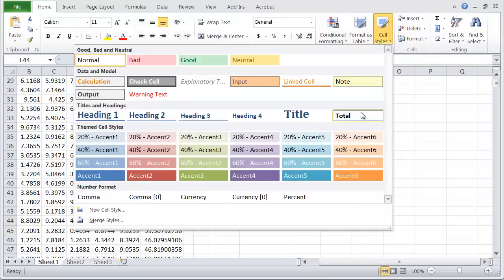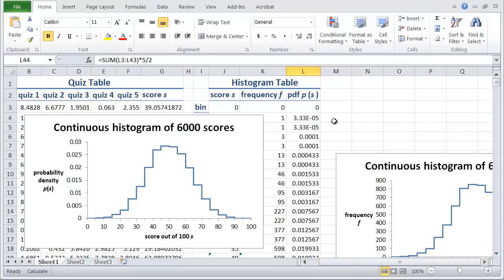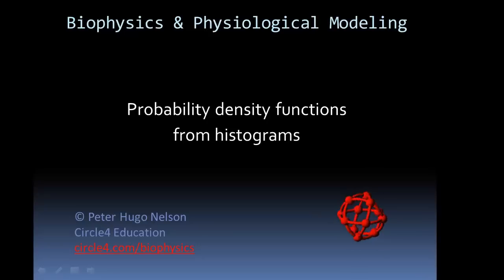And to be really cool we can format it, do cell style and we can put total here so our total probability density when we add up the area of all the rectangles is in fact one so we've successfully converted a histogram into a probability density function.